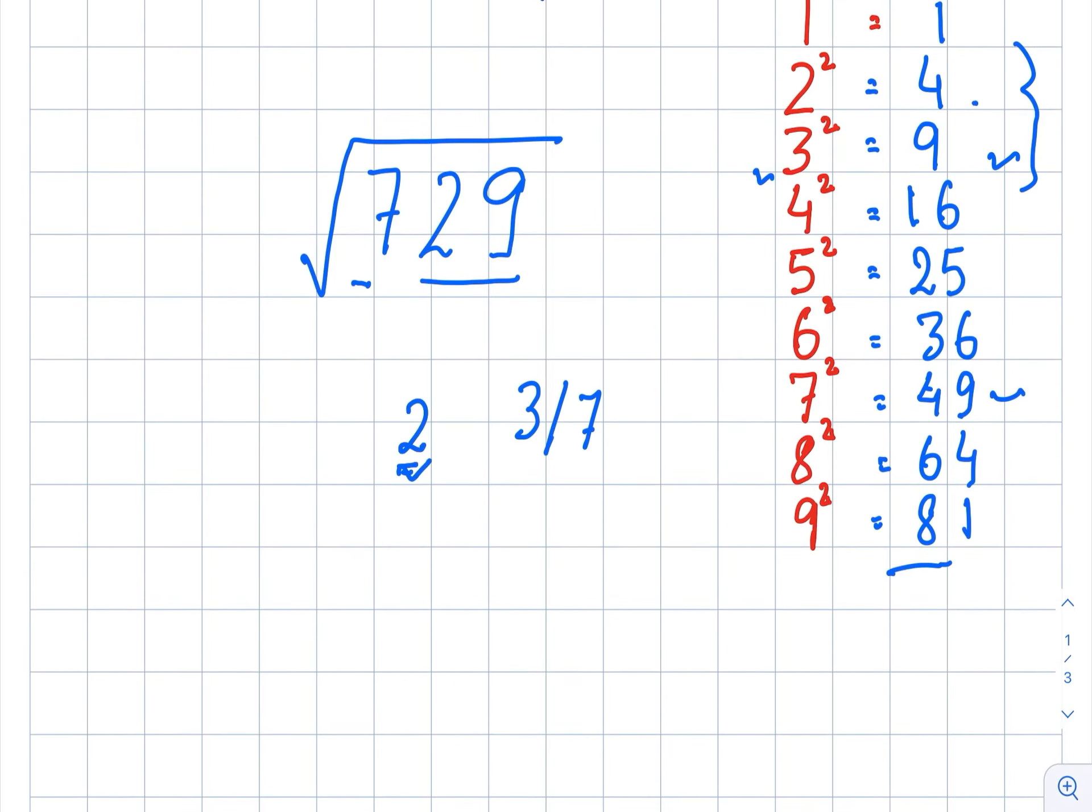Now for units place, simply multiply this number, the tens place number, to its consecutive number, which is 3. 2 multiplied by 3 is 6. Now 7 is bigger than 6, so here we will pick the bigger number, which is 7. So square root of 729 is 27.